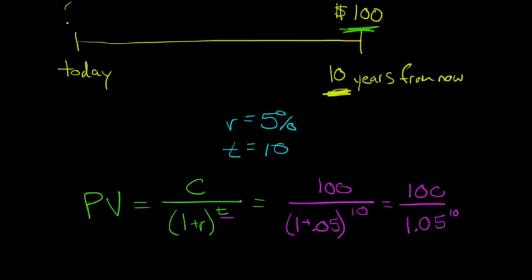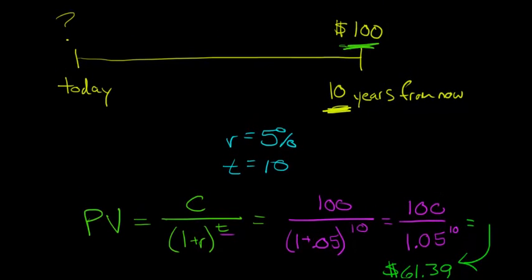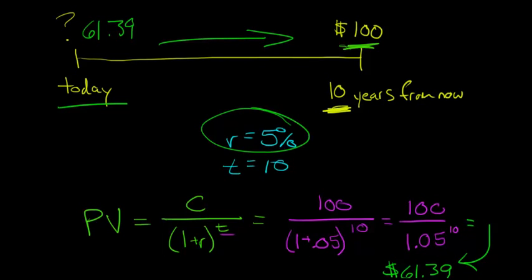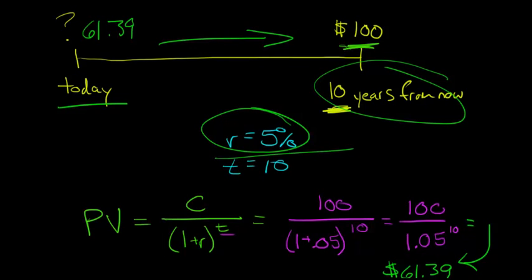That gives us $61.39. So what does that tell us? It tells us that we would have to invest $61.39 today in order to receive $100 ten years from now, assuming a 5% rate of return on our investment. So if someone says 'I'll give you $100 ten years from now,' and you can earn a 5% return, then that $100 ten years from now is really worth $61.39 today.